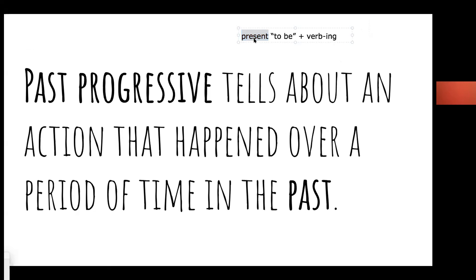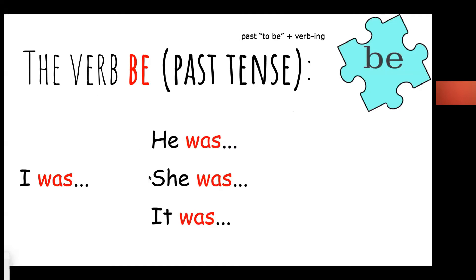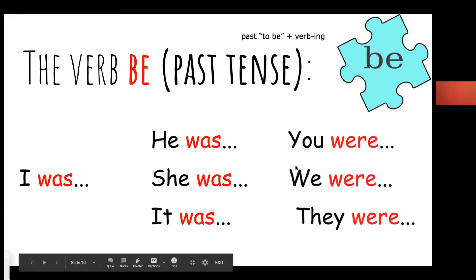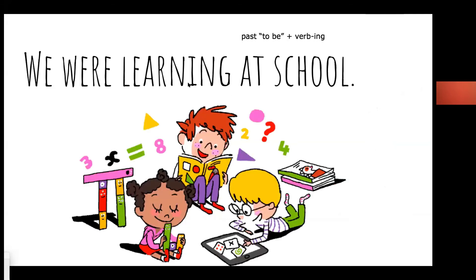To form the past progressive, instead of the present tense of 'to be,' we need the past tense of the verb 'to be' plus a verb ending in '-ing.' The past tense forms are: 'I was,' 'he/she/it was' — for example, he was hungry, she was crying, it was raining yesterday. For plural subjects: you were, we were, they were — plus a verb with the '-ing' ending.